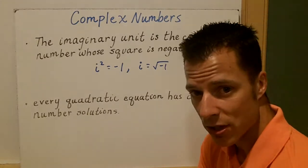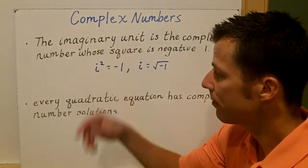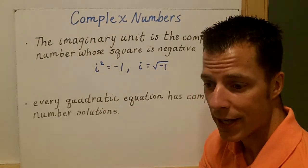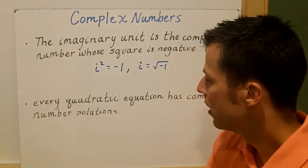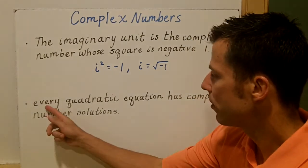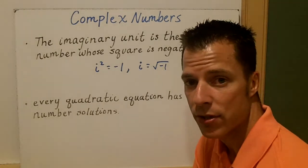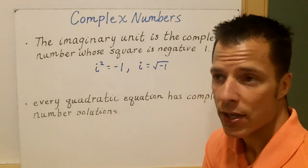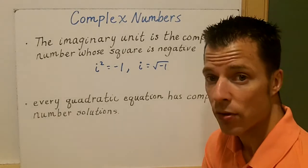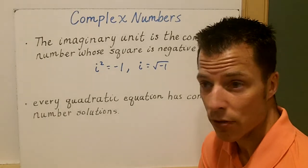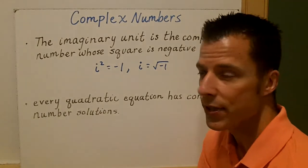This is a new number set — it's actually larger than the real numbers. We're going to be talking about complex numbers and actually three types of numbers that are complex. It's important to know that every quadratic equation has a complex number solution, whether it's imaginary, whether it's just complex, or if it's even a pure imaginary solution. We'll look at those in a second.